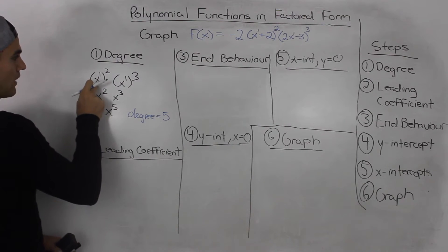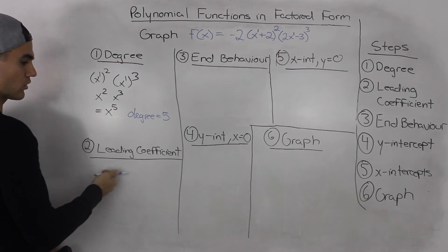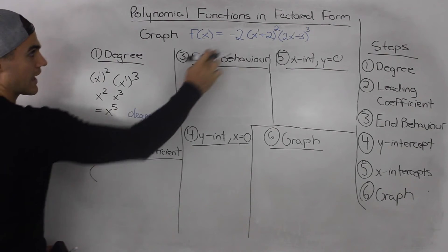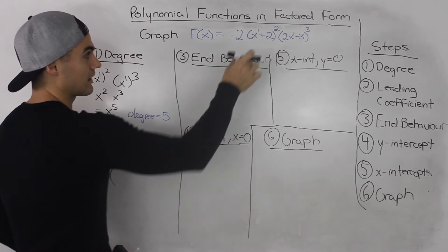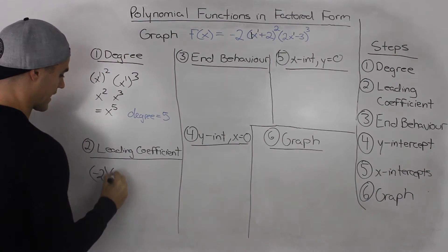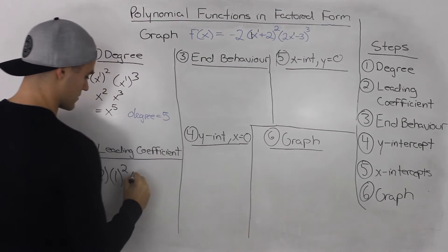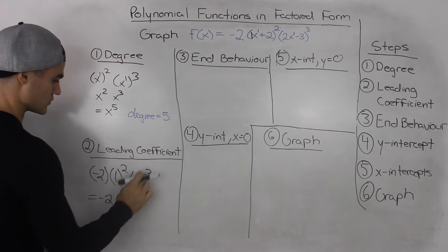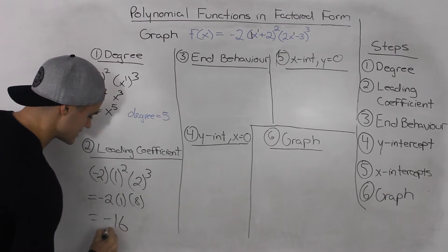Notice how I only included the x's and didn't put whatever leading coefficients are in front of the x's in the brackets, because we're going to deal with those in step 2 right now. The leading coefficient — the way we find that is we take any number in front, so this negative 2, and then we take the leading coefficient of each bracket and raise it to the power of whatever that bracket is to the power of. The leading coefficient of the first bracket is 1, and that's to the power of 2. The leading coefficient of the second bracket is 2, and that's to the power of 3. So simplifying: negative 2, 1 squared is 1, and 2 to the power of 3 is 8. The leading coefficient is negative 2 times 1 times 8, which is negative 16.